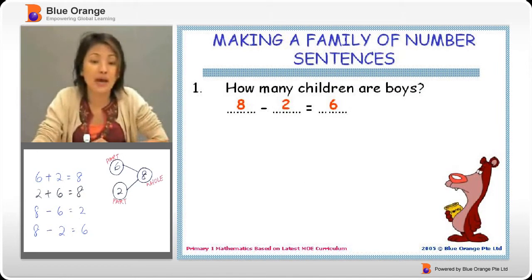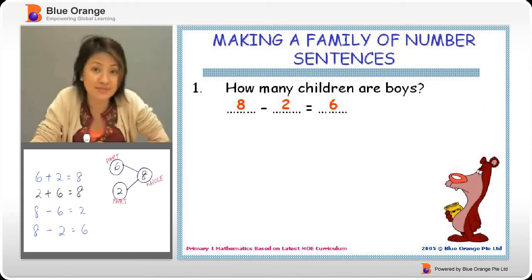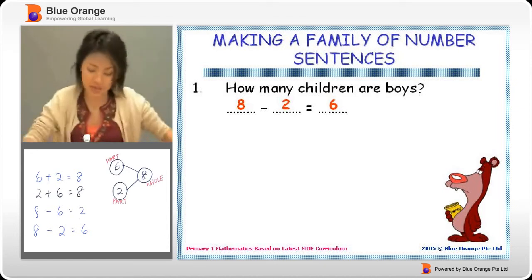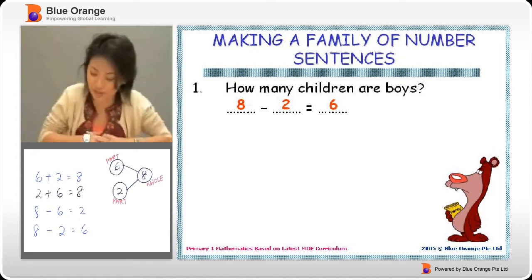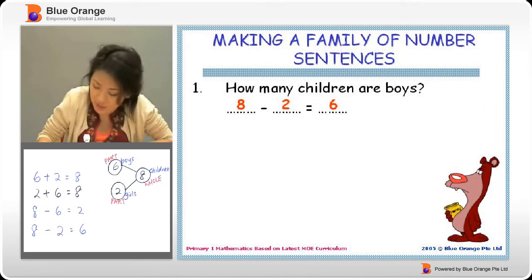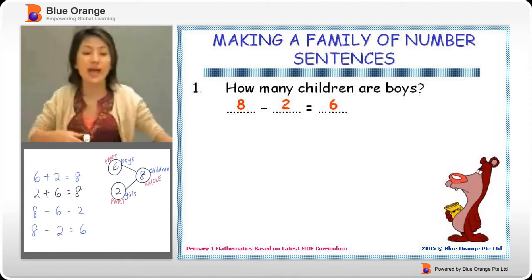So how many children are boys? Remember there were two girls? So we take the total number of children, take away the two girls. Let me just write down the additional information here. So these are girls, these are boys, and these are the children. So we can answer some of those questions there.